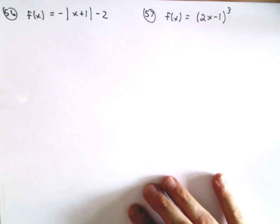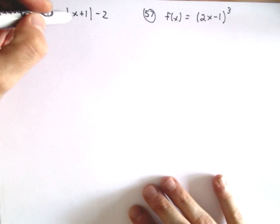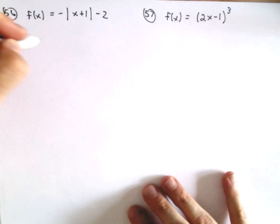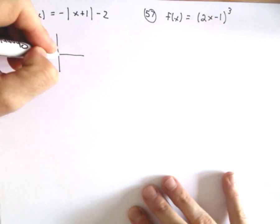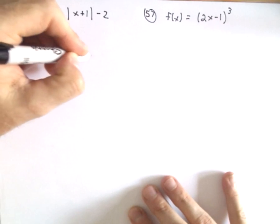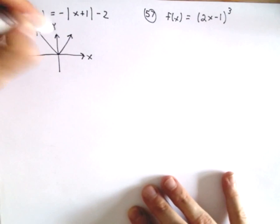So we've got the function f(x) = -|x+1| - 2. Recall that the absolute value of x is just a V, or you know it looks like a V.